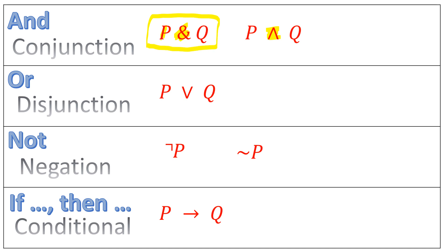We have the atomic sentence P. We have the atomic sentence Q. They're combined together through the and sentential connective to get P and Q. P is the case, and Q is the case.